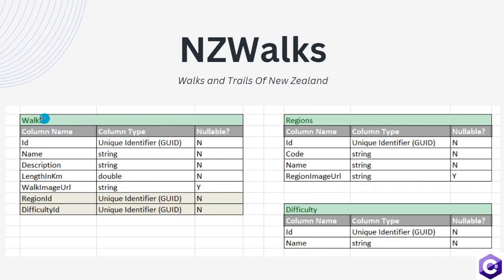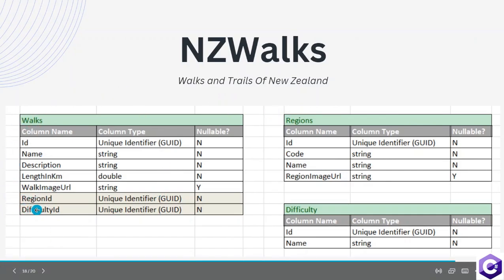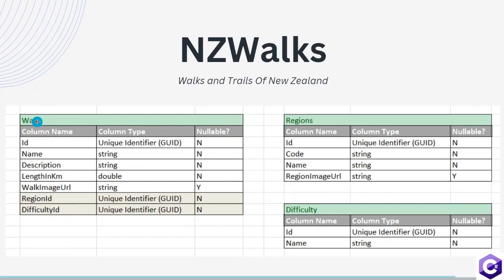Walks and regions are connected, where we have the region ID inside the walks domain model. So one walk is connected to one region at all times.